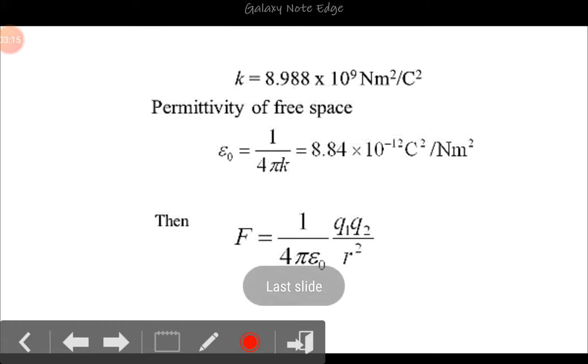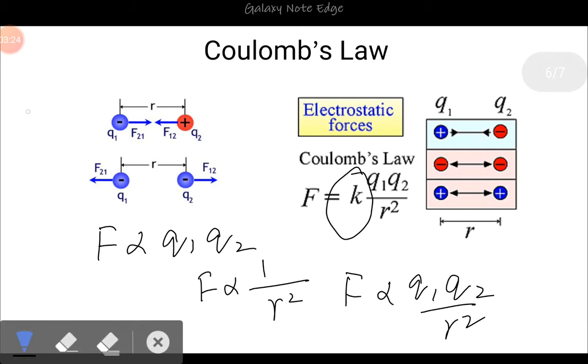Now k exactly has a value of 8.988 × 10^9 N·m²/C². But for your simplicity, you round off this value as 9 × 10^9 N·m²/C².